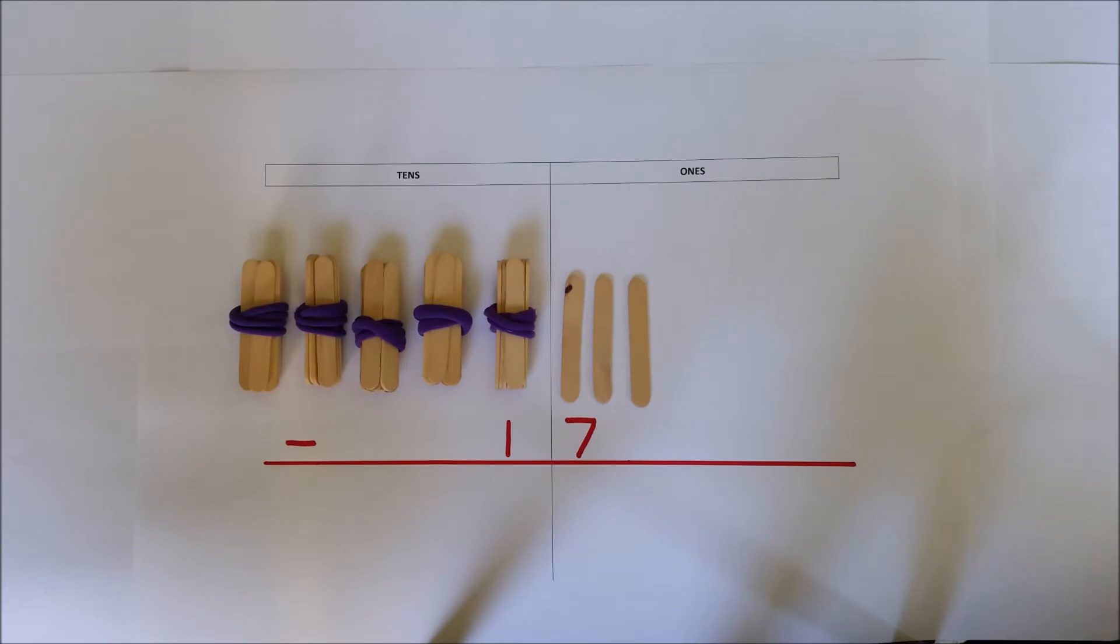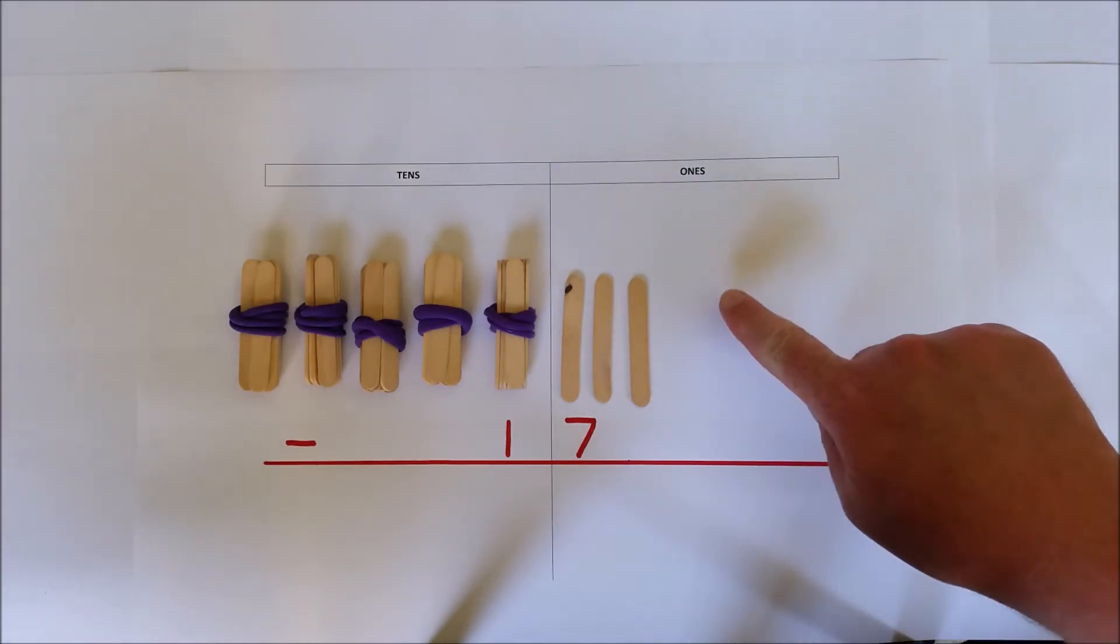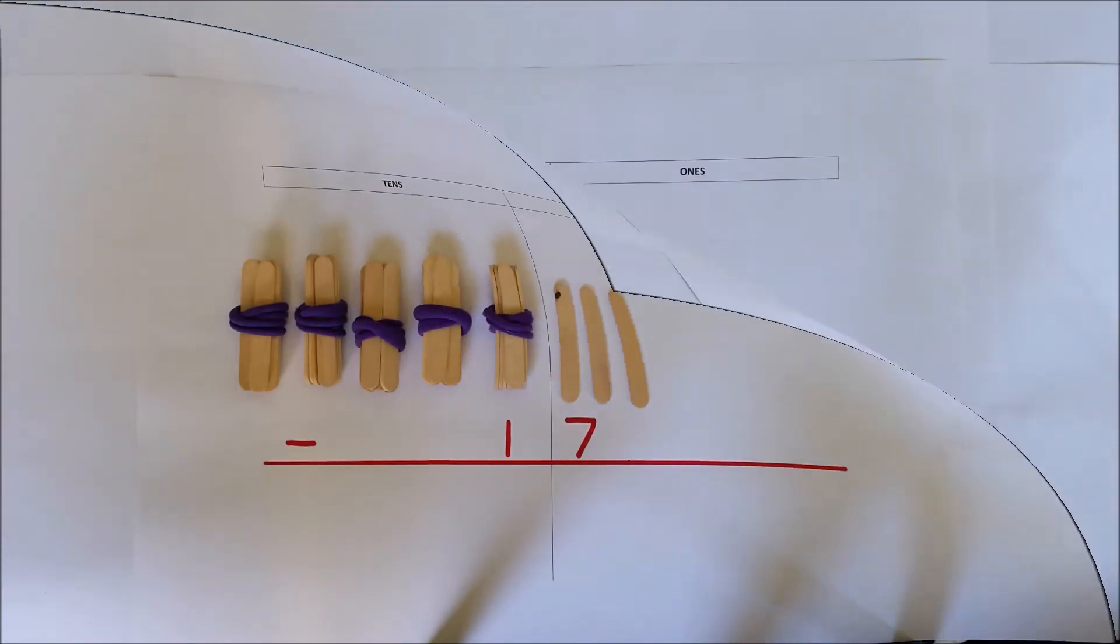When using the decomposition method for subtraction you always begin with the lowest place value and in this case it's the ones. Subtract the ones.